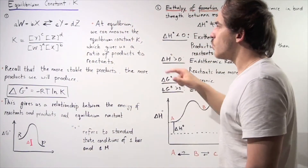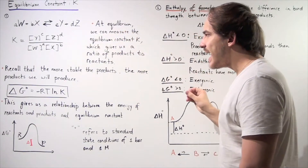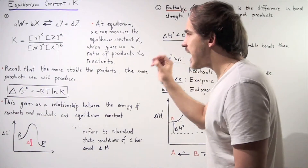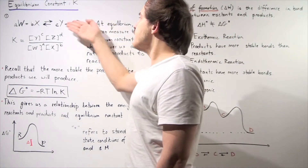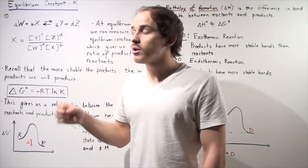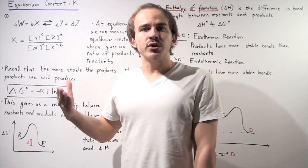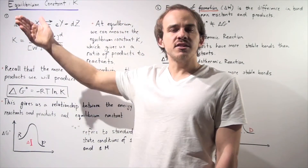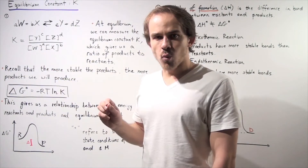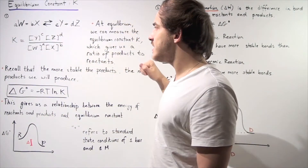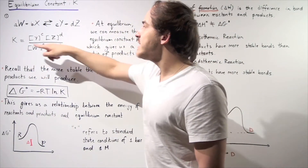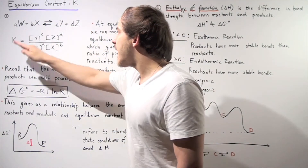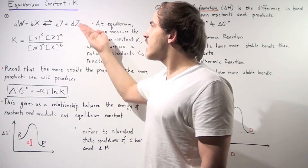At equilibrium, we can measure the equilibrium constant K, which gives us the ratio of products to reactants. If our products are much more stable than our reactants, our equilibrium will lie to the product side and K will be greater than 1. When K equals 1, the ratio of products equals the ratio of reactants. When K is greater than 1, we have much more of our products than reactants, meaning the product side is more stable.